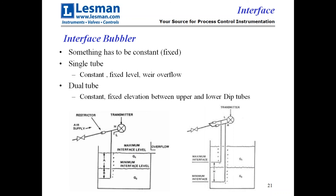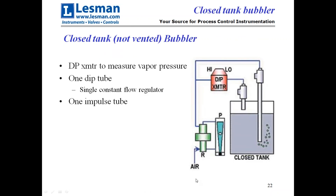In a closed tank — not a vented tank — you can use a bubbler with a DP transmitter and only one bubbler tube. Air comes in, gets constant-flow regulated, creates the bubbles at the bottom. The second tube is just an impulse tube in the vapor space up top, running to the low side of the differential pressure transmitter. This subtracts the vapor pressure from the combined vapor pressure plus liquid head, to get just the liquid level — one impulse tube, one constant flow regulator, but you use a DP transmitter.